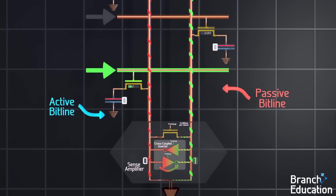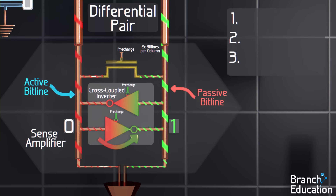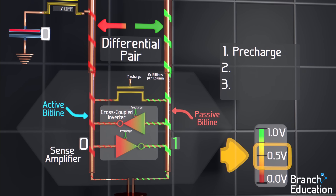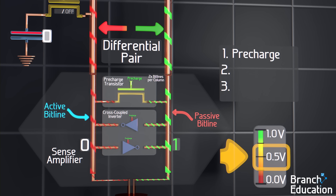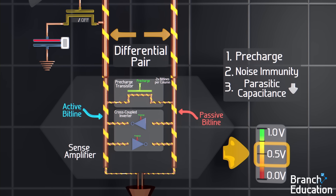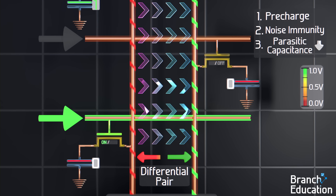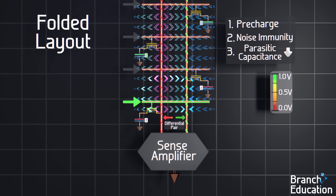The cross-coupled inverter makes it such that these two bitlines are always going to be opposite one another — they're called a differential pair. There are three benefits to this design. First, during the pre-charge step, we want to bring all the bitlines to 0.5 volts, and by having a differential pair of active and passive bitlines, the easiest solution is to disconnect the cross-coupled inverters and open a channel between the two using a transistor. The charge easily flows from the one bitline to the zero, and they both average out and settle at 0.5 volts. The other two benefits are noise immunity and a reduction in parasitic capacitance of the bitline, related to the fact that by creating two oppositely charged electric wires, we reduce the amount of electric fields emitted in stray directions and increase the ability of the sense amplifier to amplify one bitline to one volt and the other to zero volts.